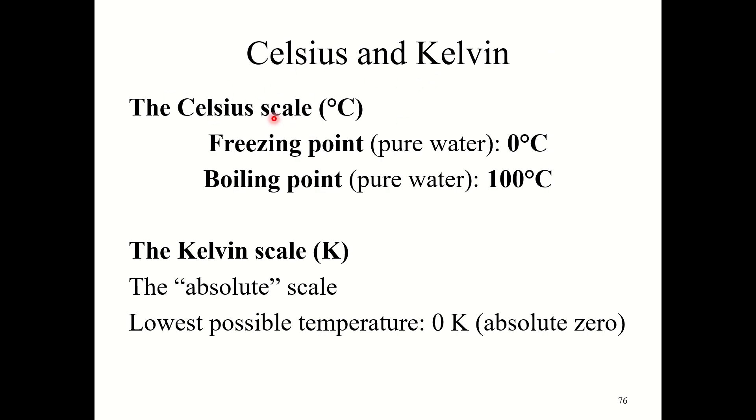Now the Celsius scale, again, is based on water. The freezing point of water is 0 degrees Celsius. The boiling point of water is 100 degrees Celsius. Now the Kelvin scale is what's considered the absolute scale. So the lowest possible temperature is 0 Kelvin, which is absolute 0.